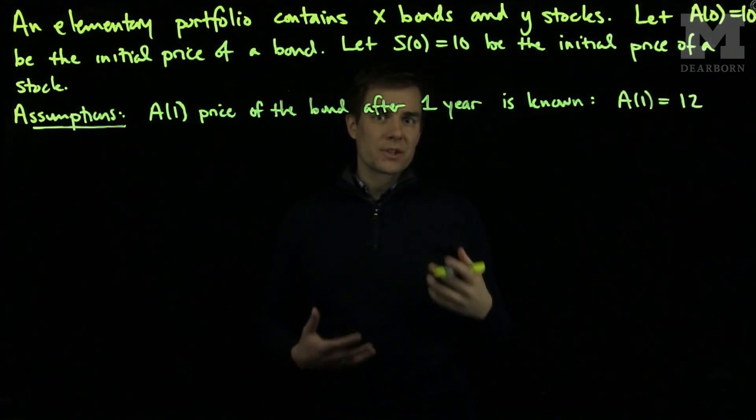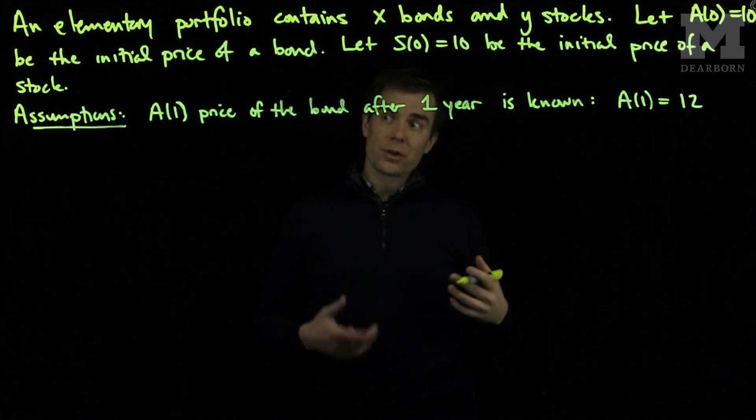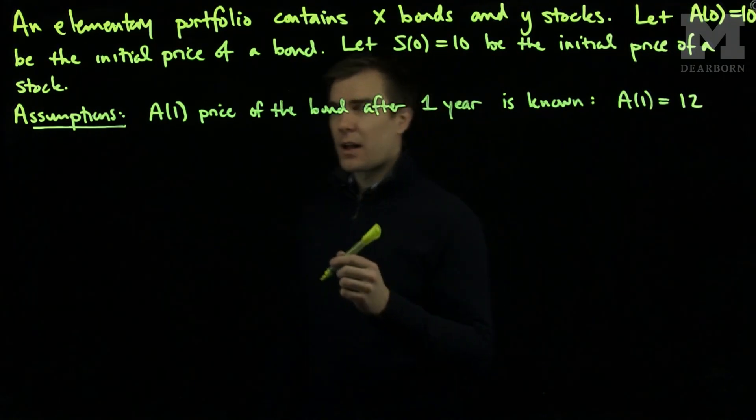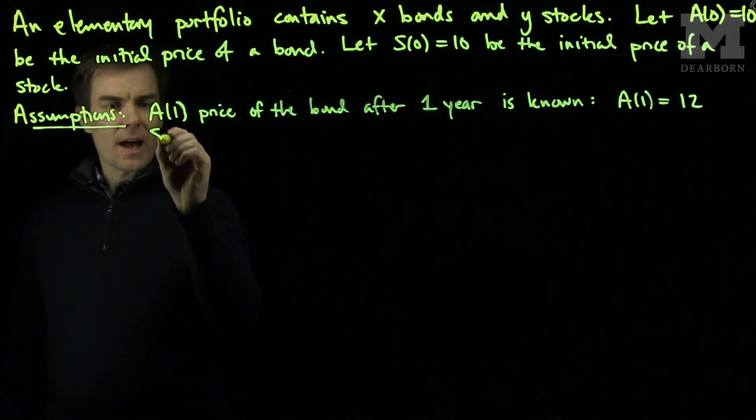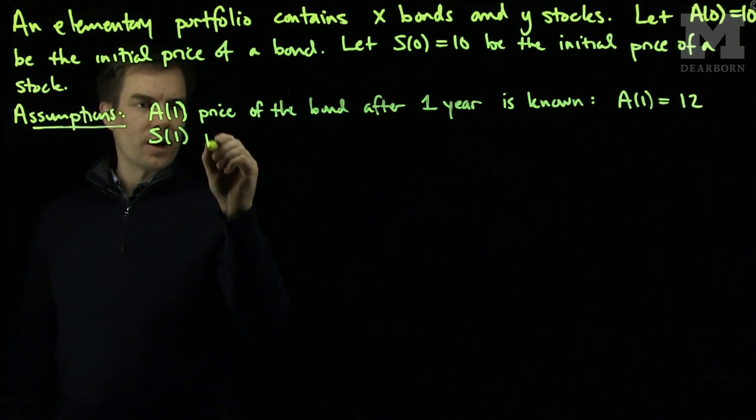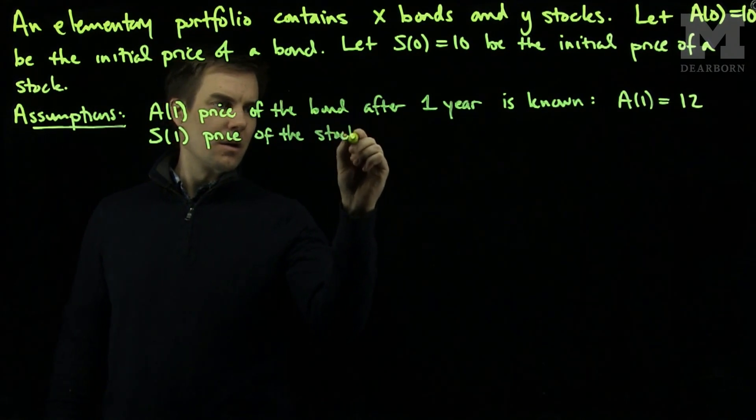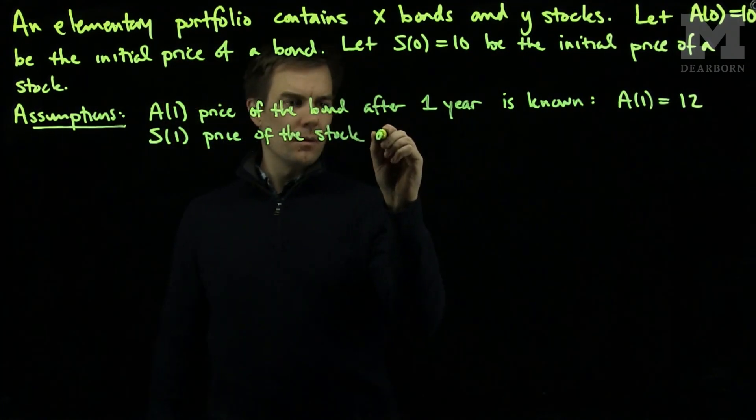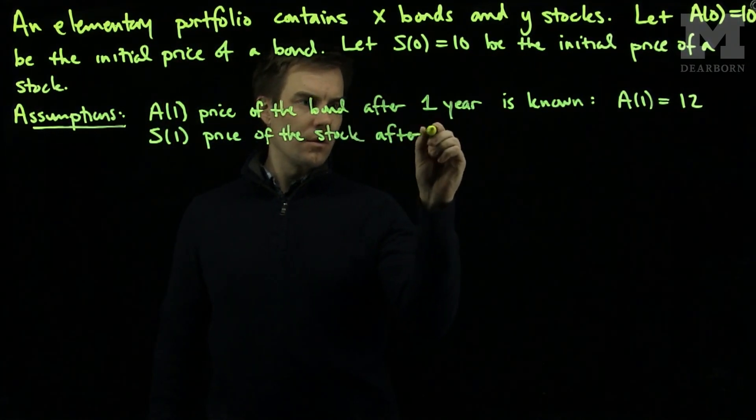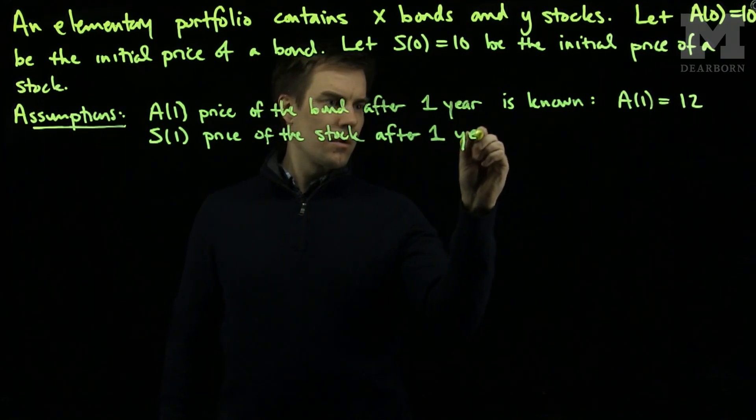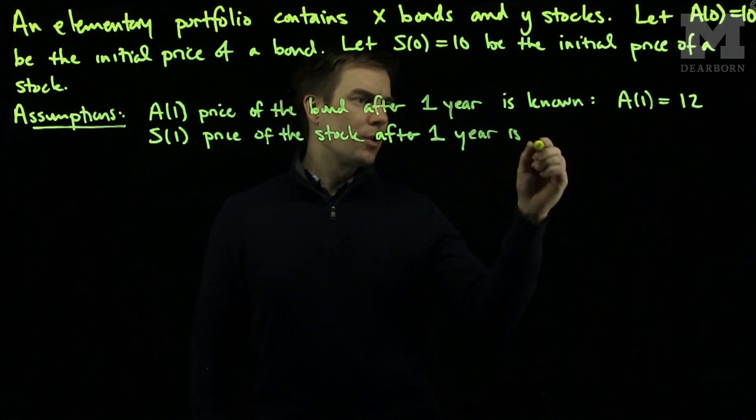Meaning that we get a 20% gain on our initial investment of $10. We'll say that S(1), the price of the stock after one year, is random.